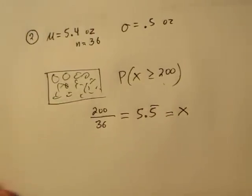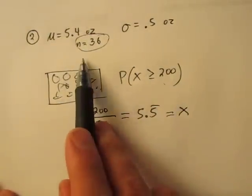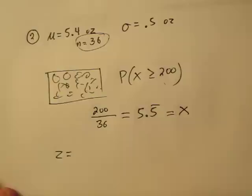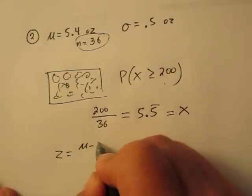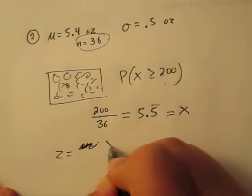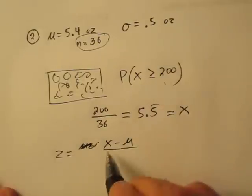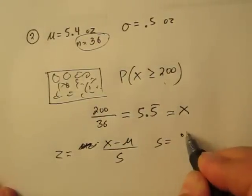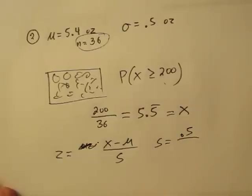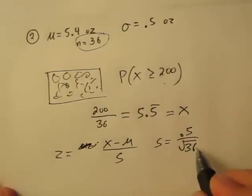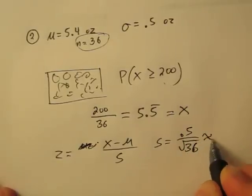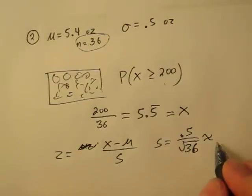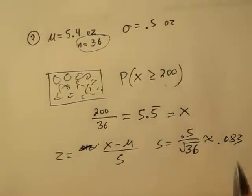Now since we're talking about 36 apples, we have to use our z formula that has sample standard deviation in it. So that's x minus mu over s. s is going to be our previous standard deviation divided by the square root of 36, which is about 0.083.